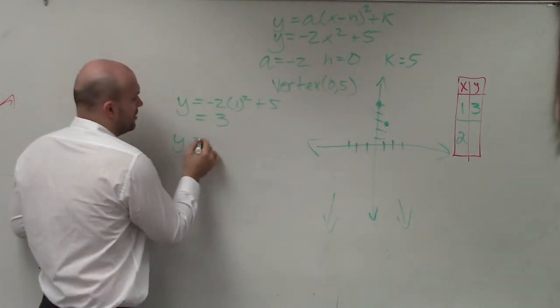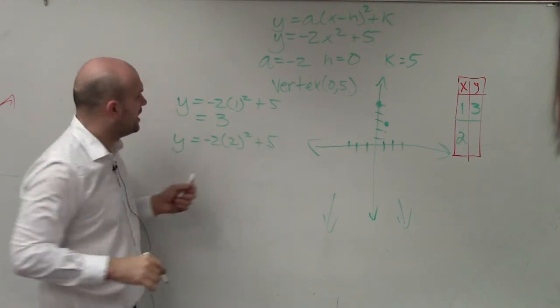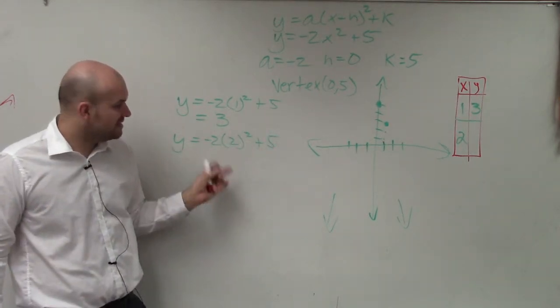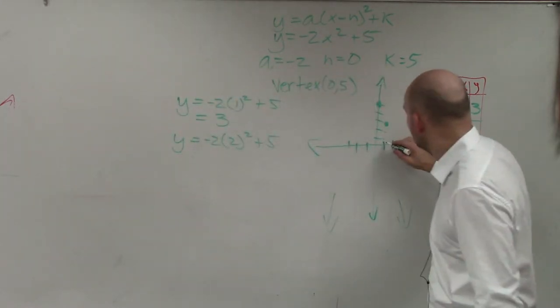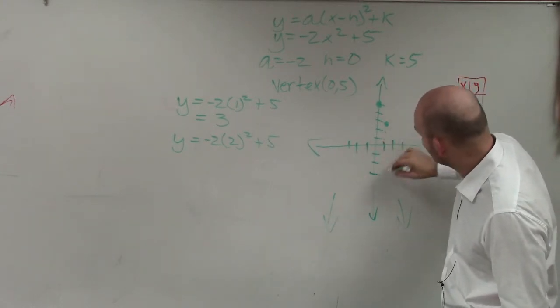Now let's plug in 2. Y equals negative 2 times 2 squared plus 5. 2 squared is 4. 4 times negative 2 is negative 8. Negative 8 plus 5 is negative 3. So over 2, I'm at now negative 3. 1, 2, 3.